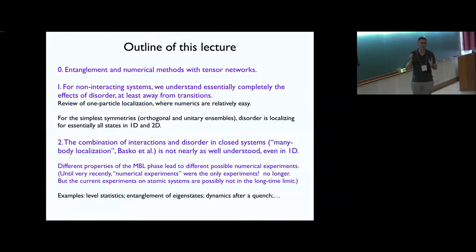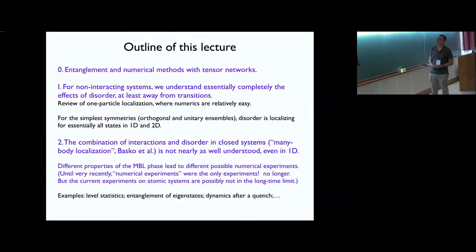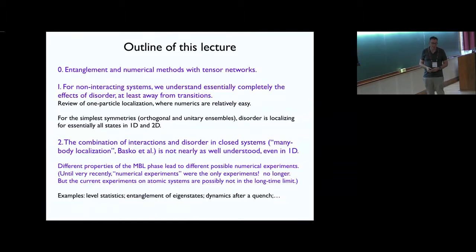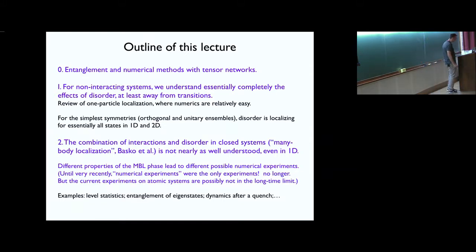The key to understanding these numerical methods is really entanglement, which is also a useful way to think about the MBL phase. Entanglement probably is part of the standard education in theoretical physics now, which it wasn't when I was a student. I'll remind you of what it is, then we'll jump into numerical methods and then MBL. As a prelude to MBL, Anderson localization — localization by disorder in non-interacting systems — has been studied for a long time; there's already a Nobel Prize for it. The key question is: once we accept that the many-body localized phase exists, how is it different from old-fashioned Anderson localization? Entanglement and conserved quantities and how they interact is kind of the key.